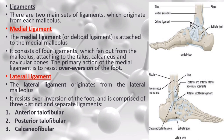Ligaments. There are two main sets of ligaments originating from each malleolus. The medial (deltoid) ligament is attached to the medial malleolus and consists of four ligaments fanning out to the talus, calcaneus and navicular bones; its primary action is to resist over-eversion of the foot. The lateral ligament originates from the lateral malleolus and resists over-inversion of the foot; it is comprised of three separate ligaments: the anterior talofibular, spanning from the lateral malleolus to the lateral talus; the posterior talofibular, spanning to the posterior talus; and the calcaneofibular, spanning to the calcaneus.